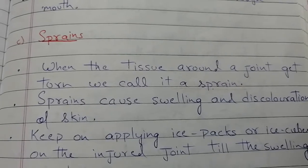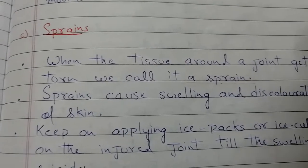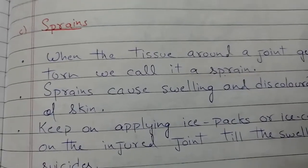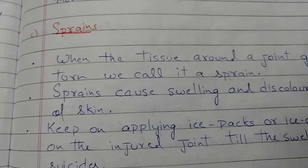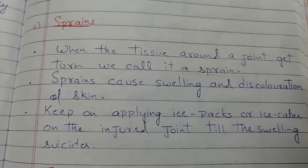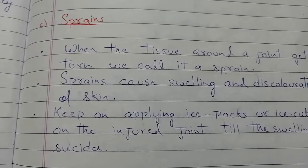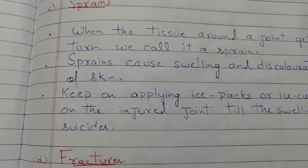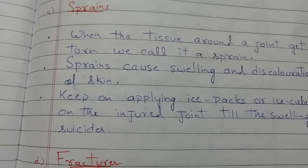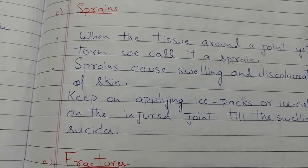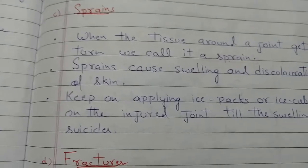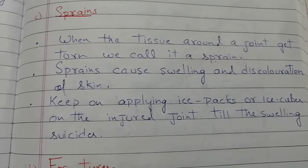Sprains: when the tissue around a joint gets torn, we call it a sprain. You may have seen this in cricket matches where sprains occur to players. A sprain causes swelling and discoloration of the skin. Keep applying ice packs or ice cubes on the injured joint until the swelling subsides.